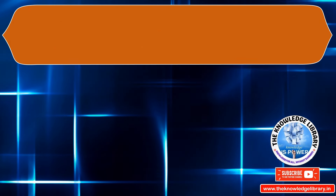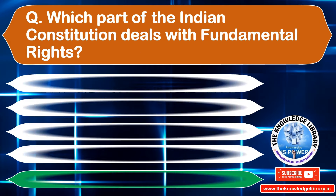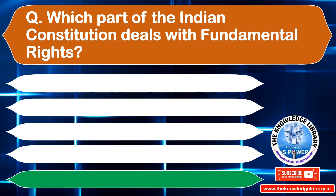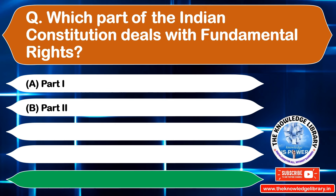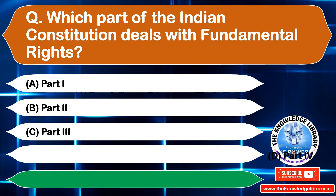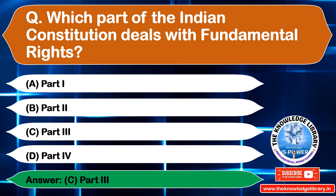The first question is: which part of the Indian Constitution deals with the fundamental rights? Option A: Part 1, Option B: Part 2, Option C: Part 3, Option D: Part 4. The correct answer is Option C: Part 3.